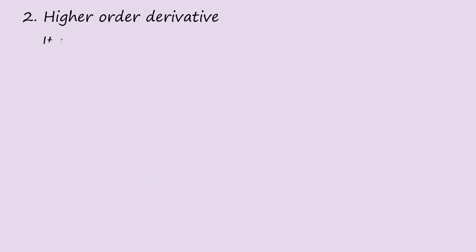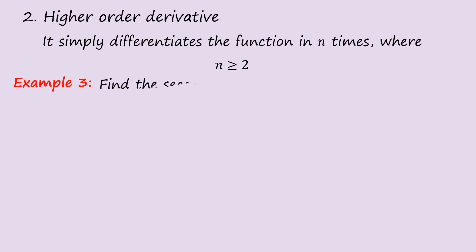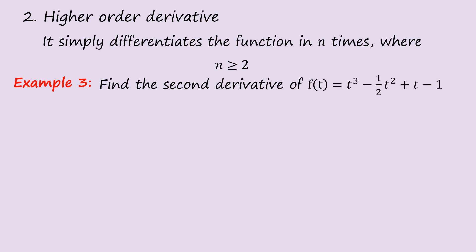Number 2: Higher-order derivatives. This simply means differentiating the function n times, where n ≥ 2. If n = 2, we call it the second order; if n = 3, we call it the third order, and so on. Example 3: Find the second derivative of f(t) = t³ − (1/2)t² + t − 1. Let's rewrite it and find the derivative.